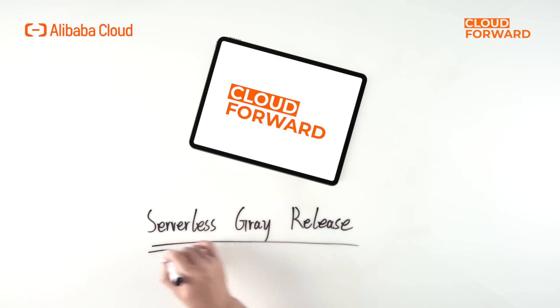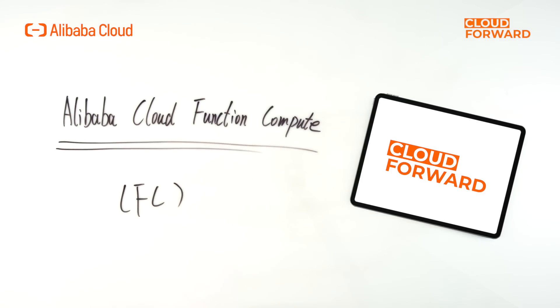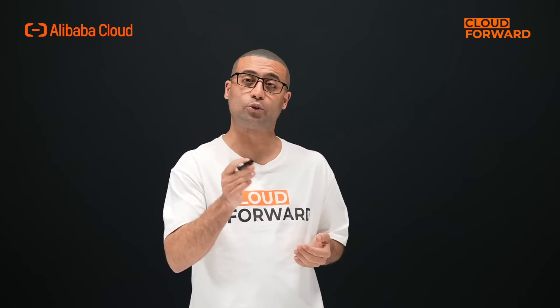Next, let's take a look at serverless gray release, using Alibaba Cloud Function Compute as an example to introduce the process and two methods of gray release. Serverless gray release is implemented through configuring aliases. Aliases can be configured to specify the traffic ratio for gray and main versions. When calling a function, use the configured alias to send traffic to the corresponding version according to the ratio.